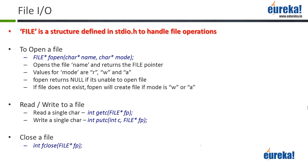putc also keeps track of where to write to the file. The first time you write, it writes to the start of the file; the second time to the second byte, and so on. This file pointer fp keeps track of where you last wrote or last read from the file. Finally, the last operation once you're done with all reads and writes is to close the file. You have a function called fclose - you just pass the file pointer and it will close the file for you.